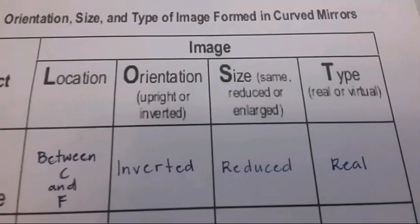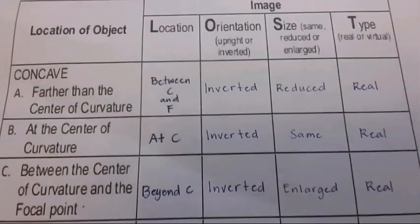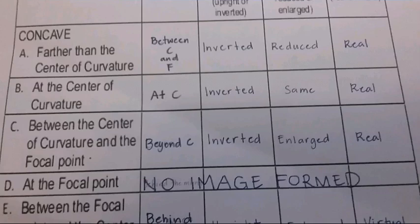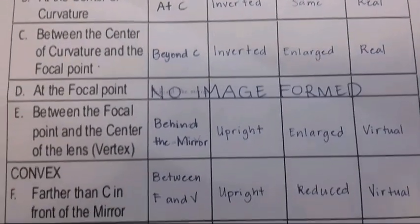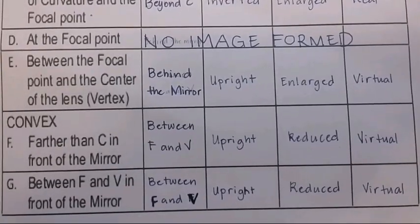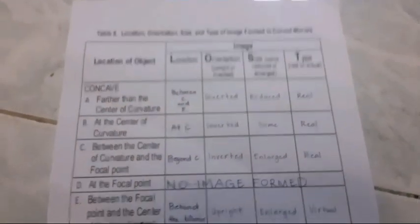The type of image. Real or virtual. A. Real. B. Real. C. Real. D. No image formed. E. Virtual. F. Virtual. G. Virtual.